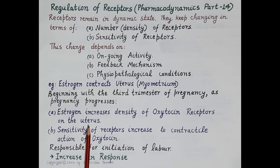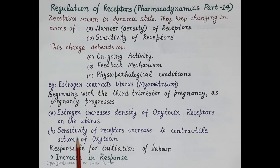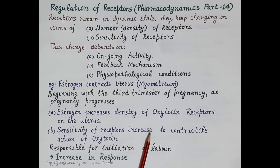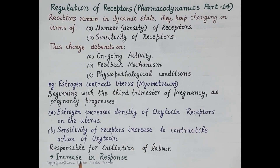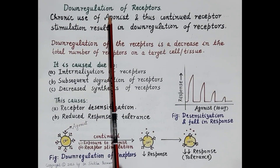There is an increase in the number of receptors because of the pregnancy. Sensitivity of oxytocin receptors also increases, especially near term, so that the uterus contracts powerfully and is responsible for the initiation of labor. Thus, as per the requirement, there is an increase in the number of receptors responsible for increasing the contractile response of the uterus necessary for childbirth.